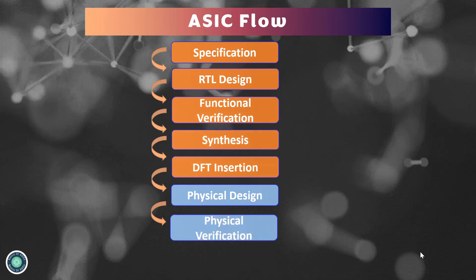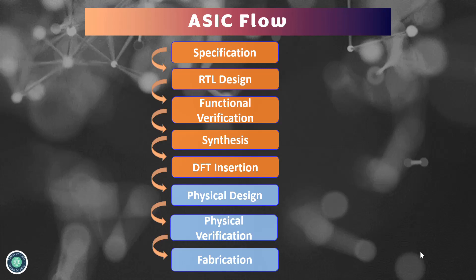Once the design layout is done and verification is complete, the design is ready for fabrication. The layout data is sent to the fabrication facility — this event of releasing the data is called tape out. The layout is then converted into photolithographic masks and other processes are performed. Finally, we have the ASIC as our product, which is then tested and packaged for use.